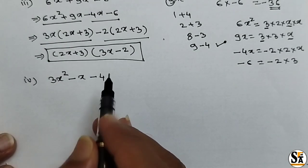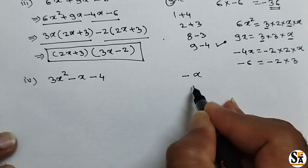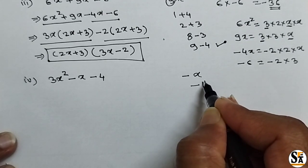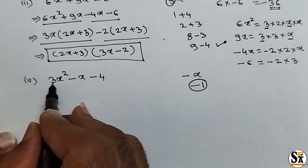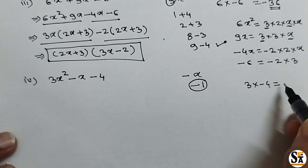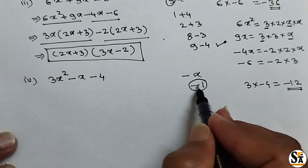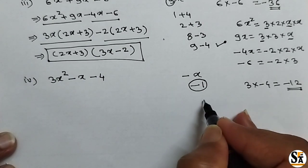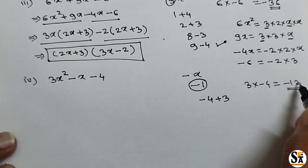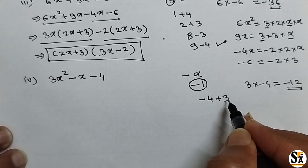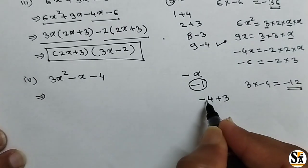Now see the last sub-question: 3x squared minus x minus 4. The middle term is minus x, and the coefficient is minus 1. We have to split minus 1 such that addition equals minus 1 and multiplication equals 3 into minus 4, which is minus 12. Using trial and error, minus 4 plus 3 gives addition minus 1 and multiplication minus 12. So these two factors satisfy our condition. We can split minus x as minus 4x plus 3x.